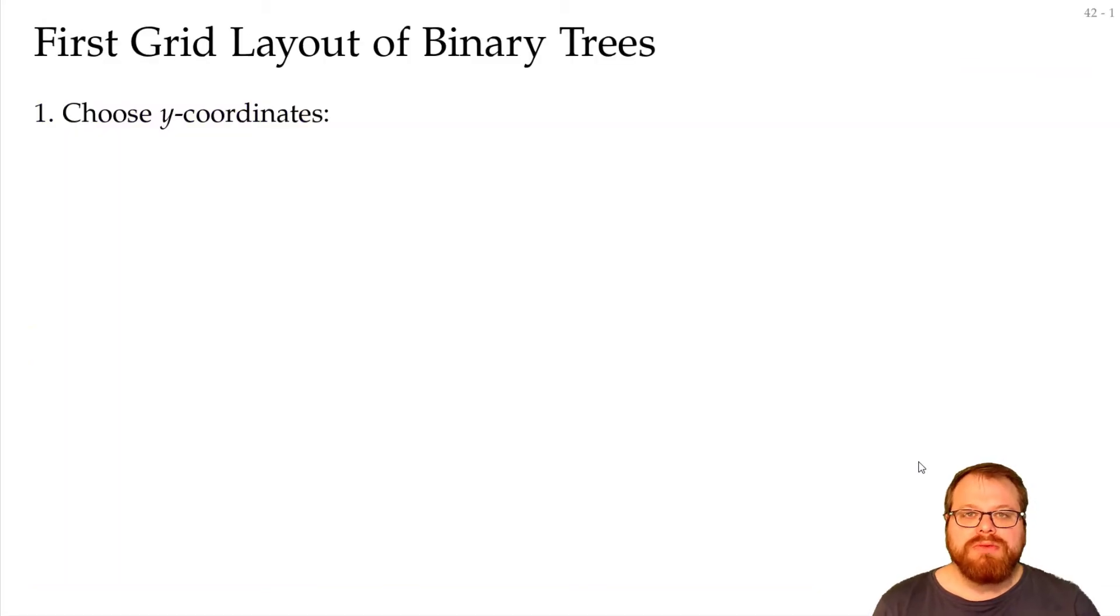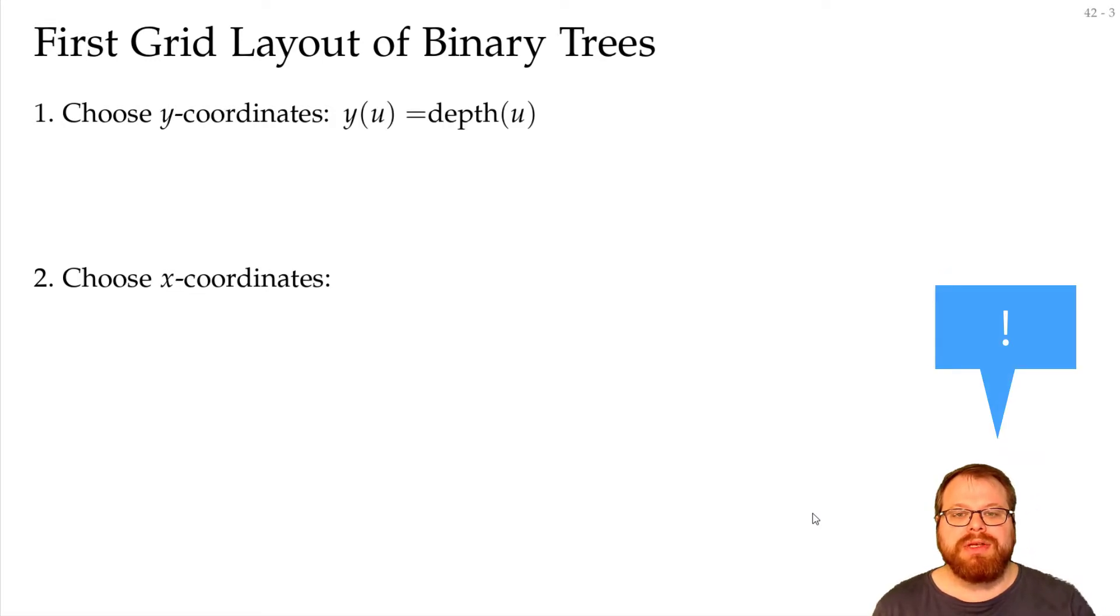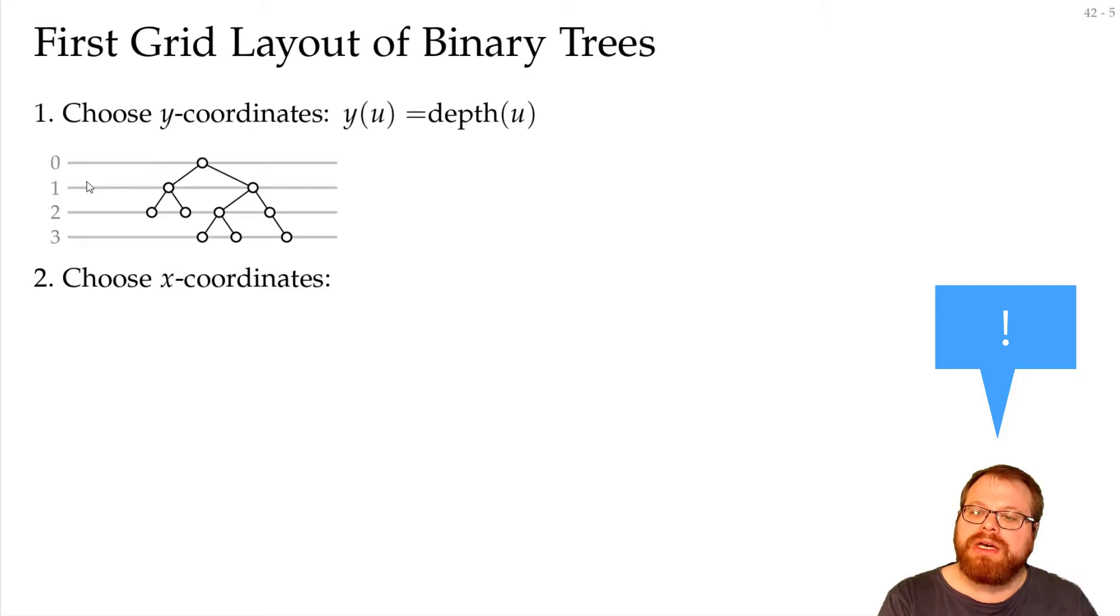And now we want to do a drawing of our binary tree. We will just do a straight line drawing. So all our edges will be straight line segments. That means we have to choose the y-coordinates and the x-coordinates of all our vertices. Here we want to just take the depth of every vertex and place it at this y-coordinate. Usually when you draw rooted trees, then you have the root at the top, which is a bit contradicting to what we learn from nature. But most of the time you want to display some hierarchies.